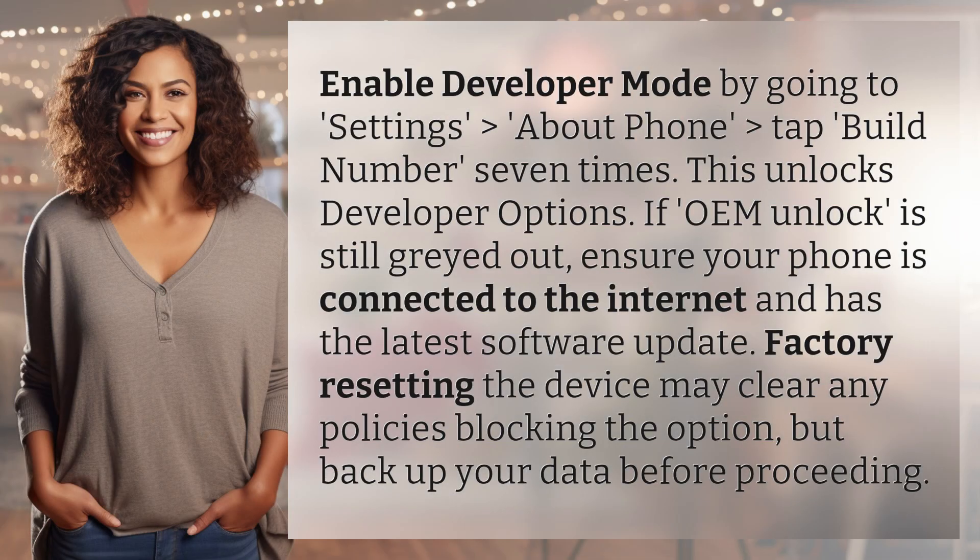Enable developer mode by going to Settings > About Phone > tap Build Number seven times. This unlocks developer options. If OEM unlock is still grayed out, ensure your phone is connected to the internet and has the latest software update.